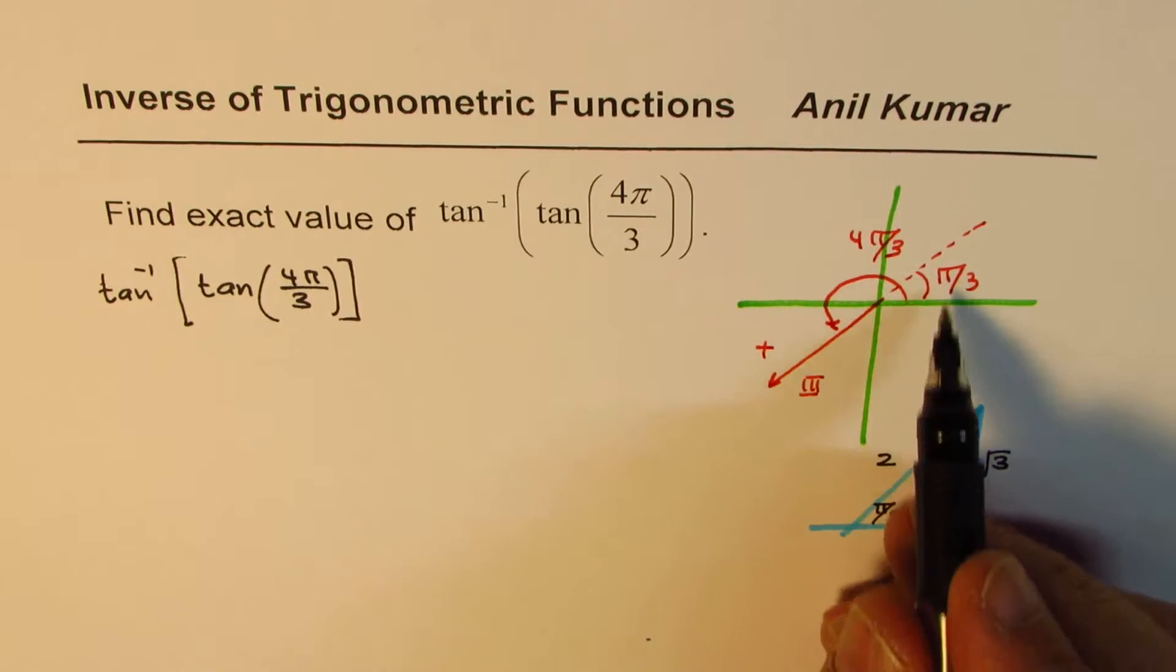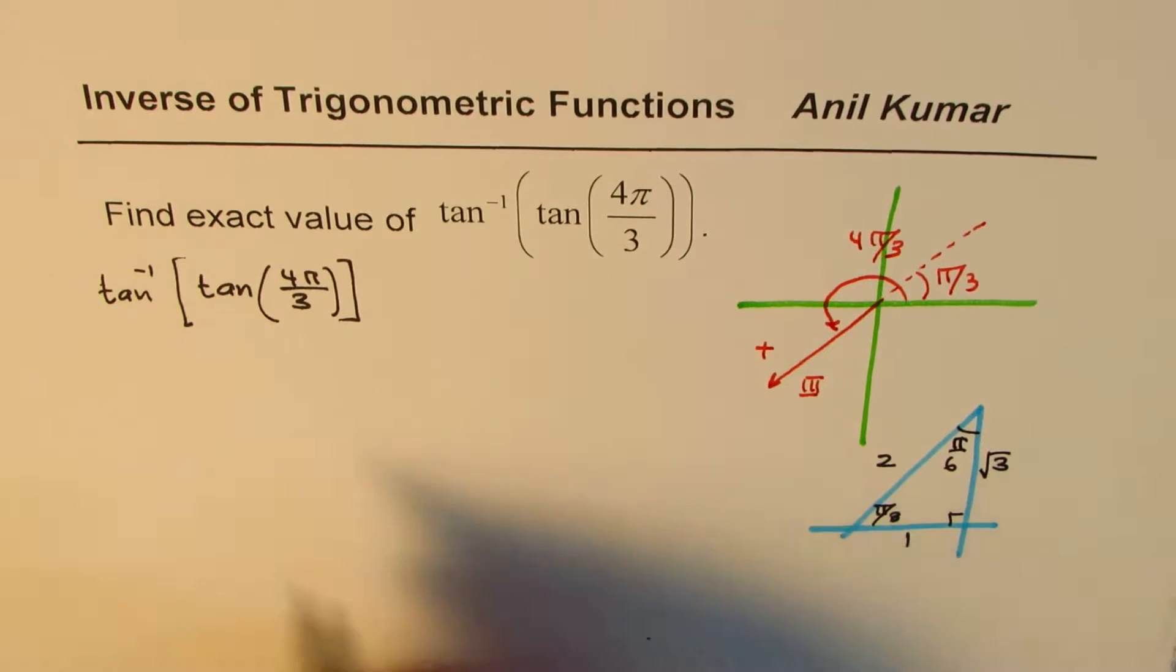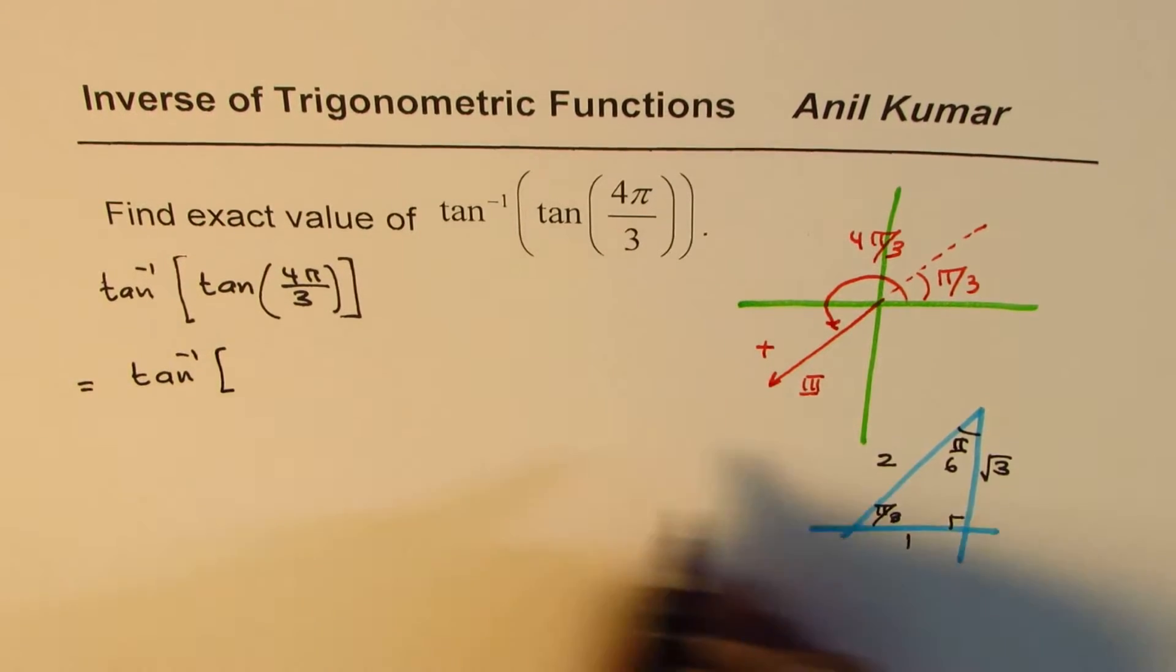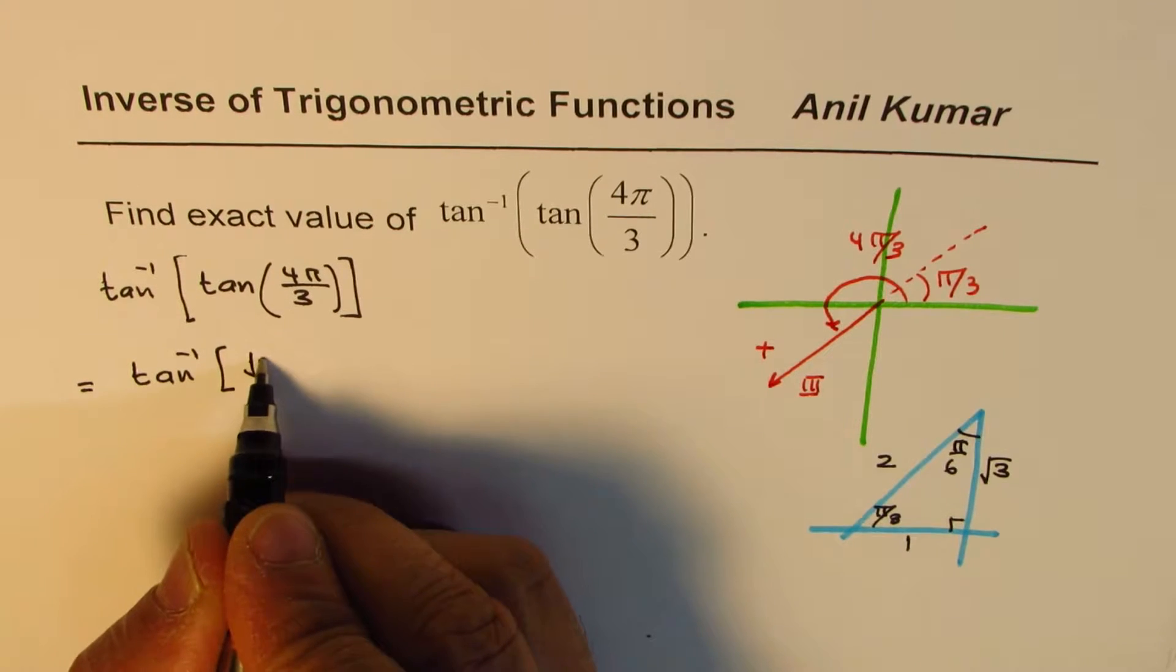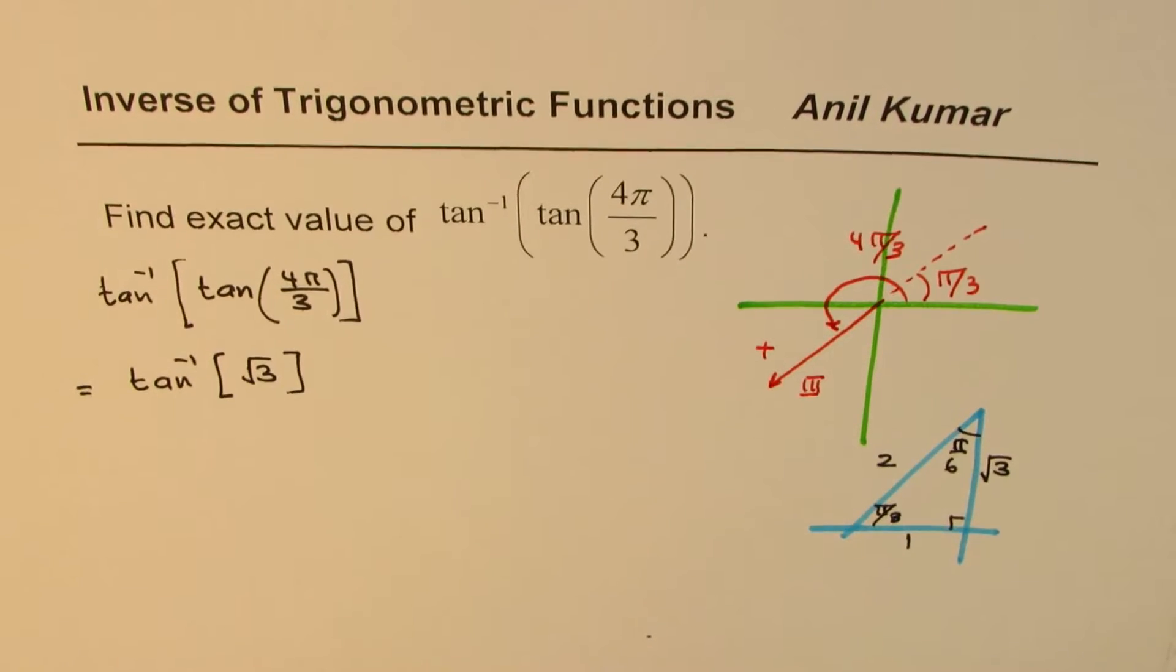So what is tan π by 3? Tan π by 3 is opposite over adjacent, so it's square root 3. So we could write this as tan inverse of square root 3.